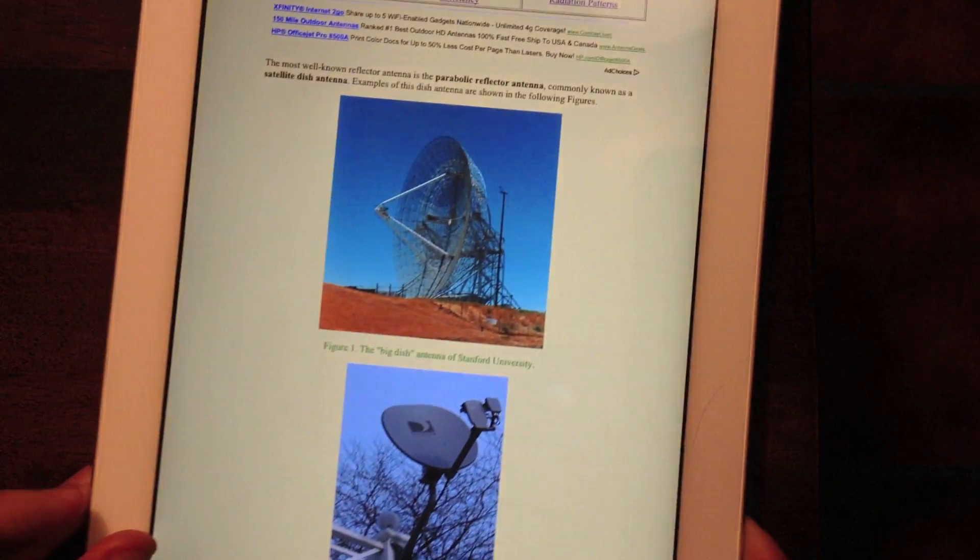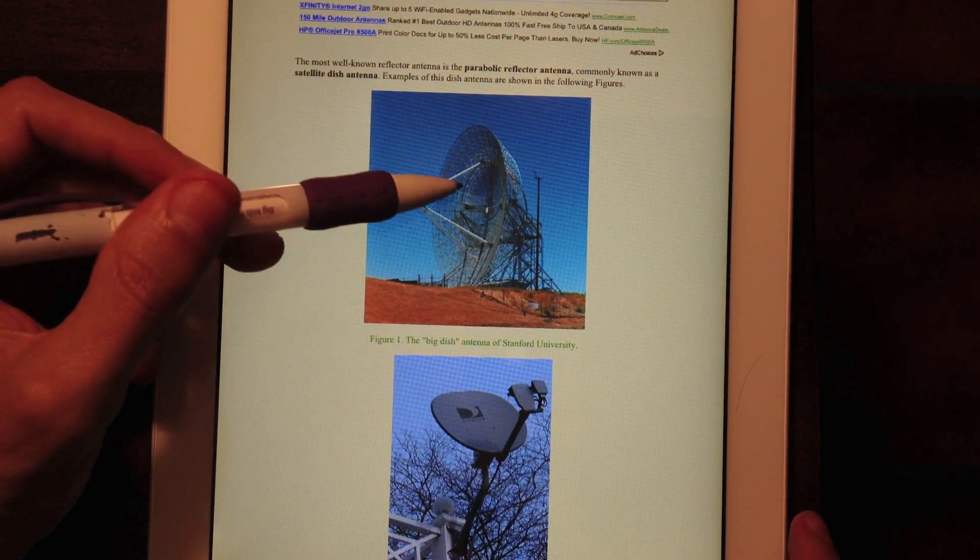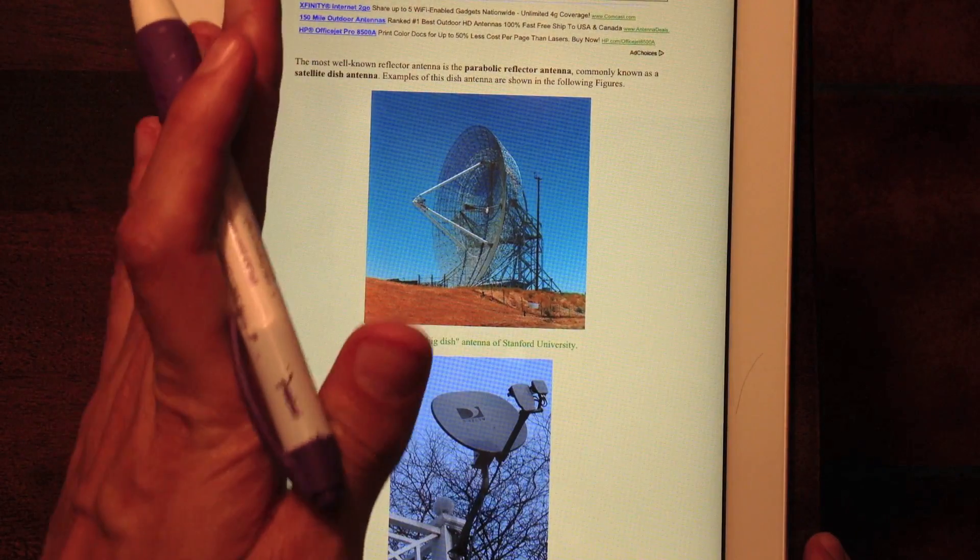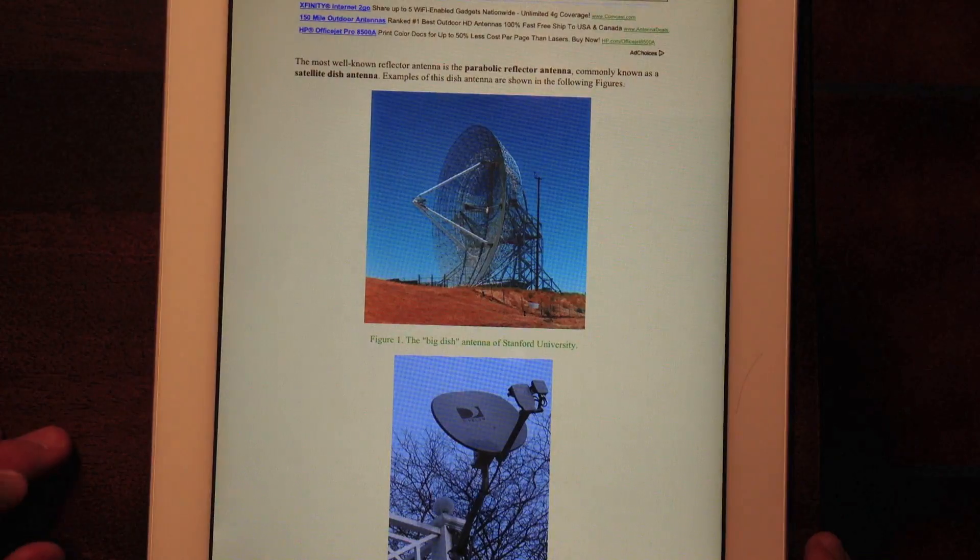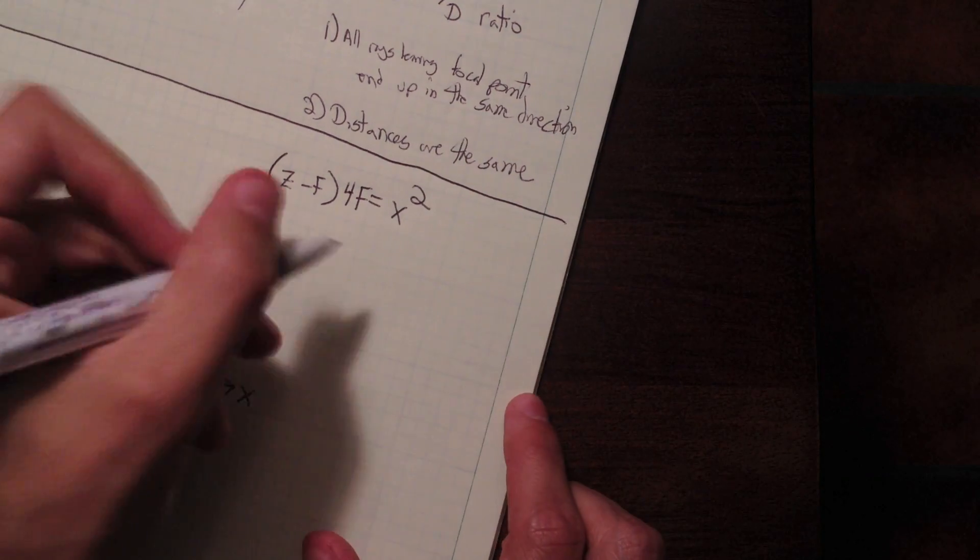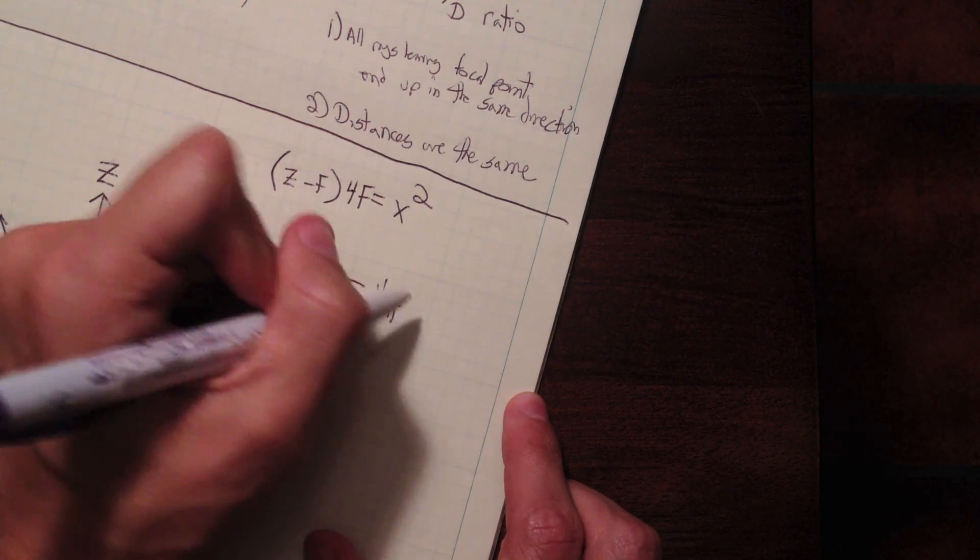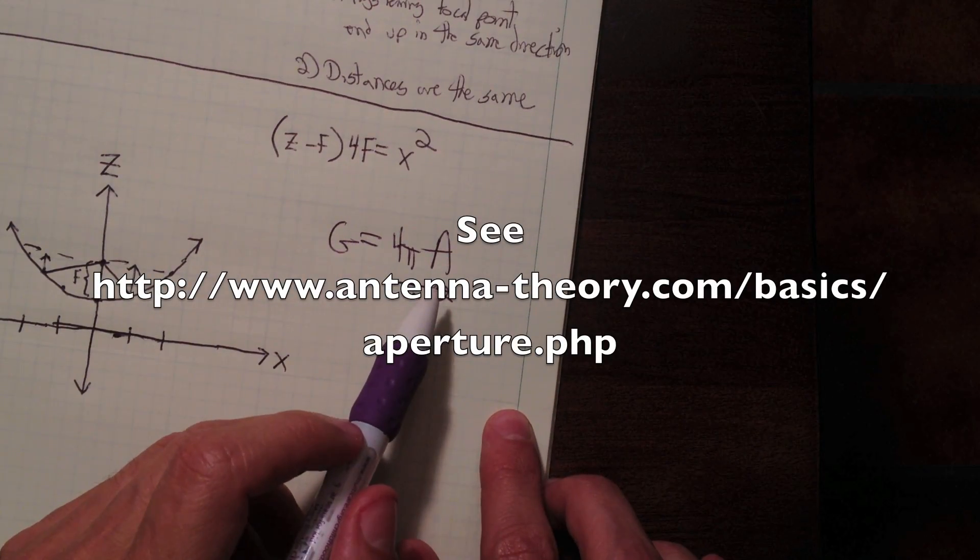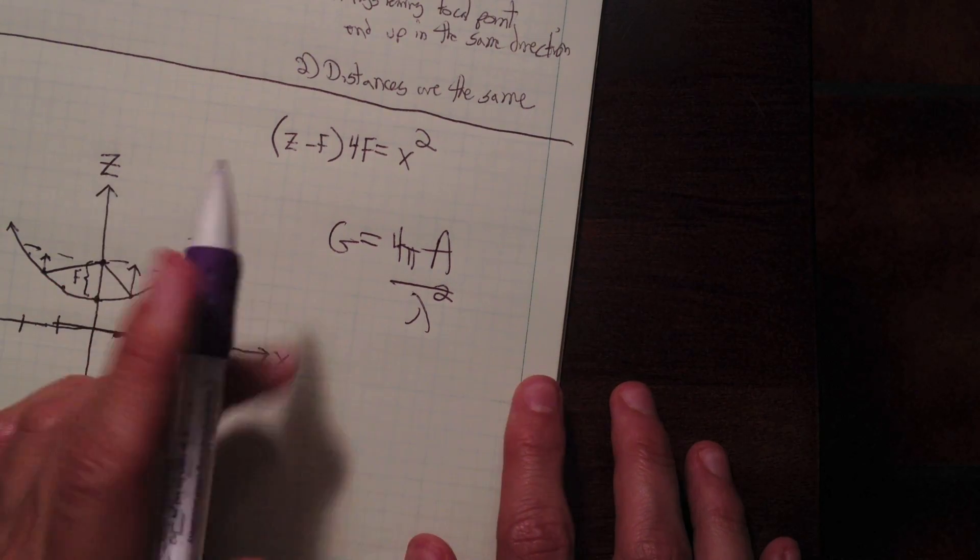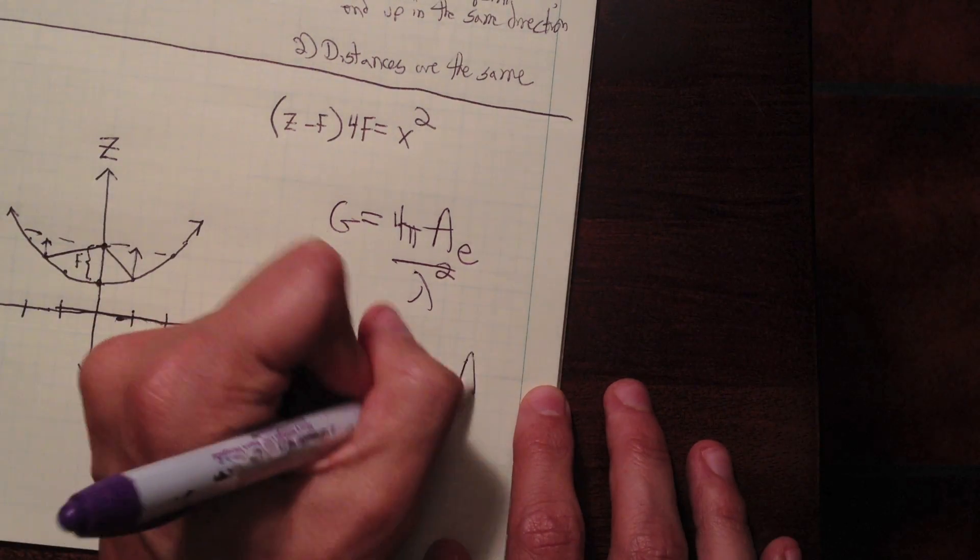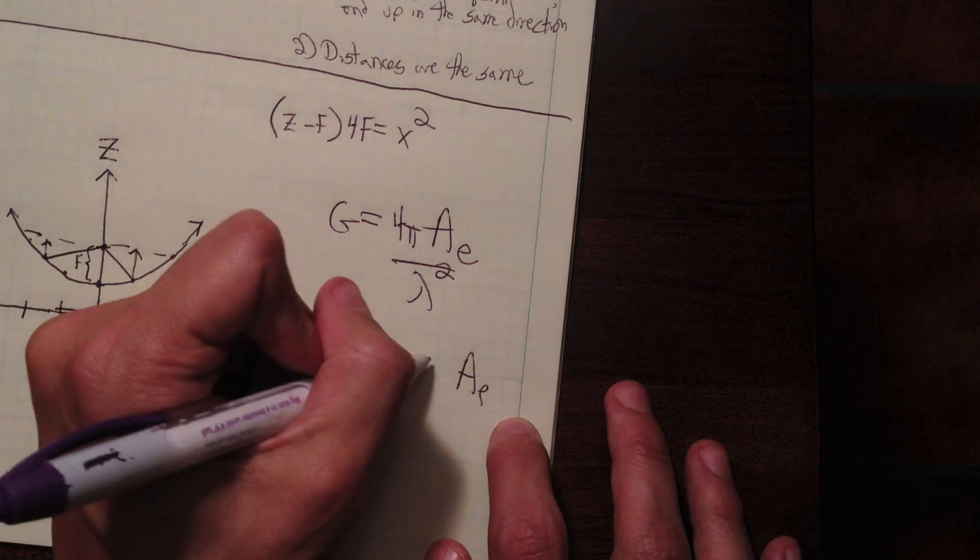So the dish antenna is an aperture antenna in that the fields that are reflected off of the reflector create kind of an aperture which is a distribution of the E field which produces the radiation. Now aperture antennas, we can write the gain of them as 4 pi A over lambda squared. But the area is actually not the area of the reflector, it's actually an effective area. And the effective area is related to the physical area, which is called A sub p, by an efficiency term.